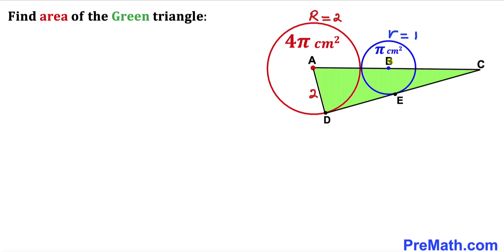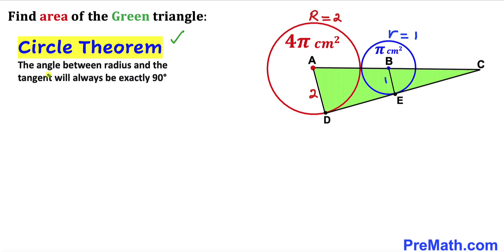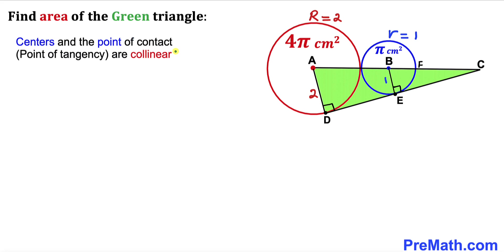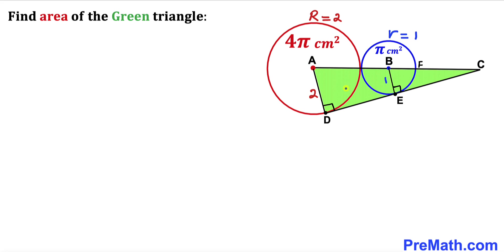Let's connect center B with point E. We can see that BE is the radius of the blue circle, so this is 1 centimeter. Now let's recall the circle theorem: the angle between the radius and the tangent line is always 90 degrees. Both of these angles are 90 degrees since these are radii and this is the tangent line. A crucial fact: the centers and the point of tangency are collinear. Here, A and B are the centers, and this point is the point of tangency, so all three points lie on the same line.